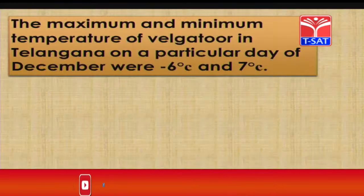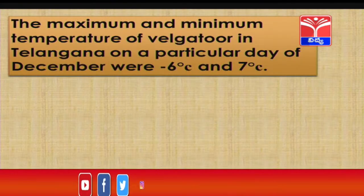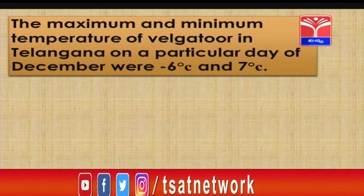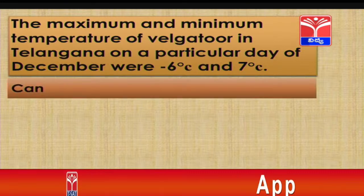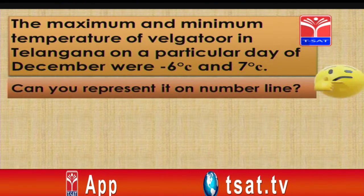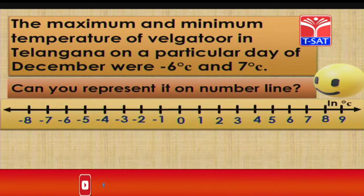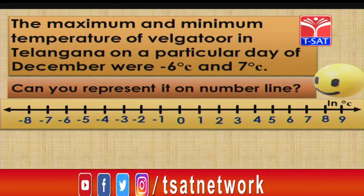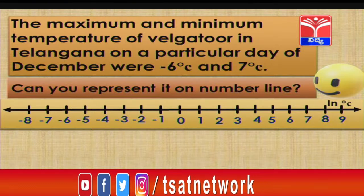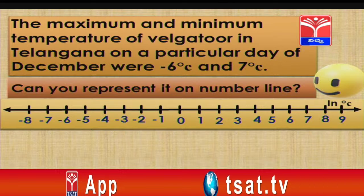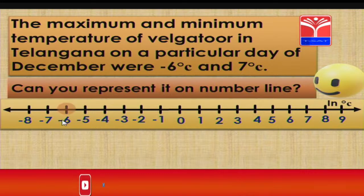The maximum and minimum temperature of Velgathur in Telangana on a particular day of December were minus 6 degrees and 7 degrees. Can you represent it on a number line? We can represent it on a number line - observe this number line that indicates degrees centigrade. We have to identify minus 6 degrees and 7 degrees on this number line. Minus 6 degrees lies at a distance of 6 units from 0, so here it is minus 6 degrees.